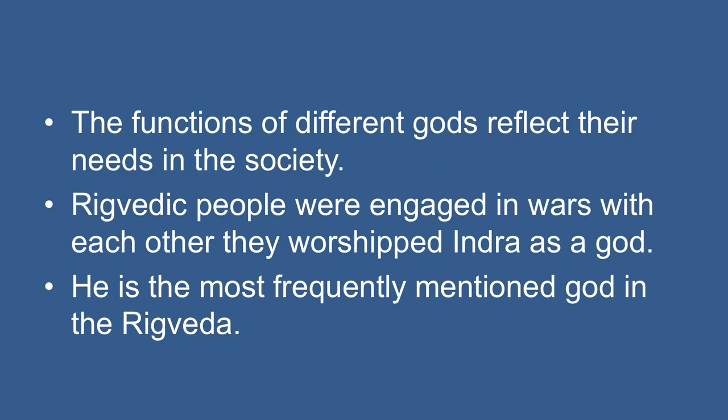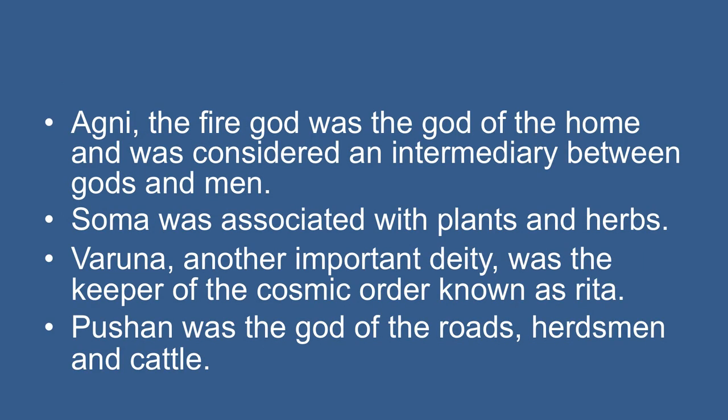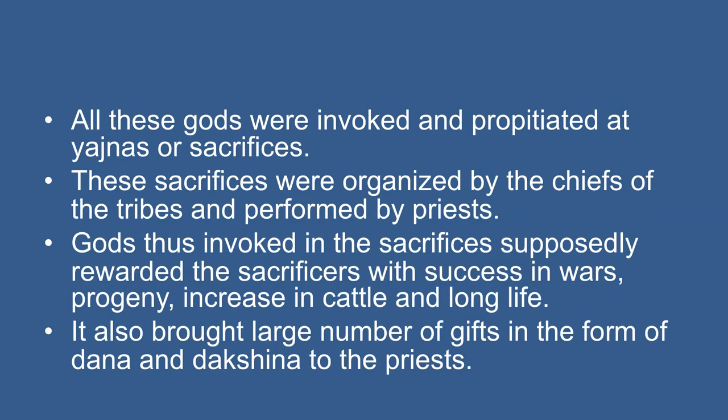The function of different gods reflects the needs of the society. Since the Rig Vedic people were engaged in wars, they worshipped Indra as a war god — he is the most frequently mentioned god in the Rig Veda, carrying the thunderbolt and also respected as a weather god who brought rains. Marut, the god of storm, aided Indra in wars. Agni, the fire god, was the god of the home and considered an intermediary between gods and men. Soma was associated with plants and herbs, and a plant from which an intoxicating juice was extracted and drunk at sacrifices. Varuna was the keeper of the cosmic order known as Rita. Pushan was the god of roads, herdsmen, and cattle. All these gods were invoked and propitiated at Yajna or sacrifice, organized by the chief of the tribe and performed by the priests.